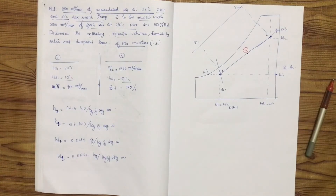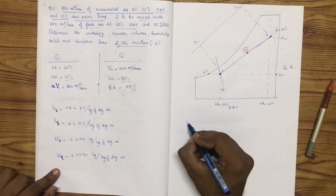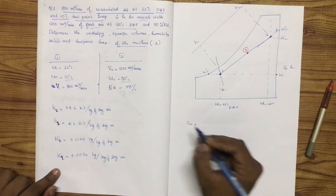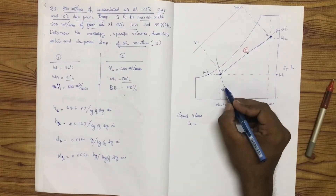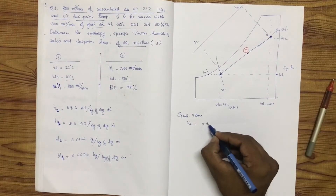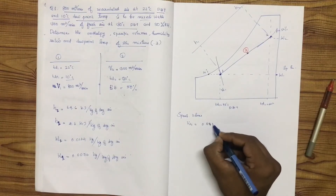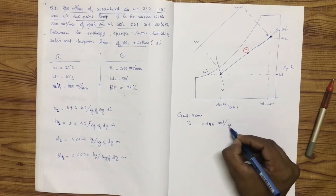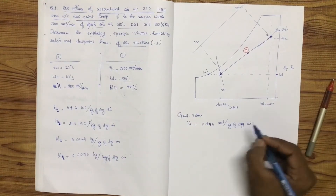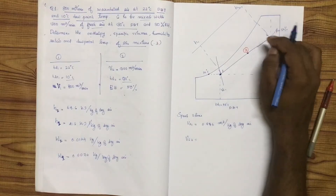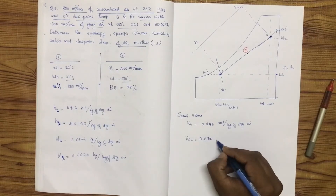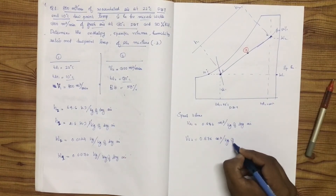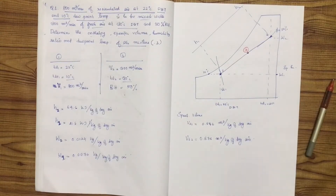The specific volumes read from the chart: Vs1 is equal to 0.846 cubic meters per kg of dry air, and Vs2 is equal to 0.876 cubic meters per kg of dry air.